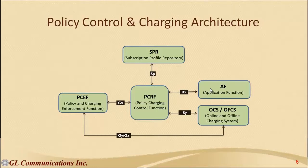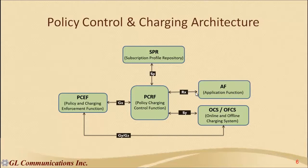For example, in VoLTE, P-CSCF implements the Application Function which decides the required quality of service and guaranteed bit rate, deriving that information from SDP parameters in Invite and 200 OK messages. It also extracts the service data flow — identifying which data flow from a mobile should be treated differently. In this case, voice packets are carried over RTP, so the source and destination IP addresses and port number pairs are used to define the service data flow.